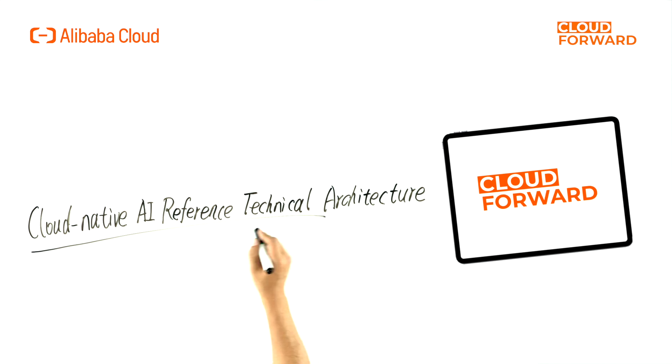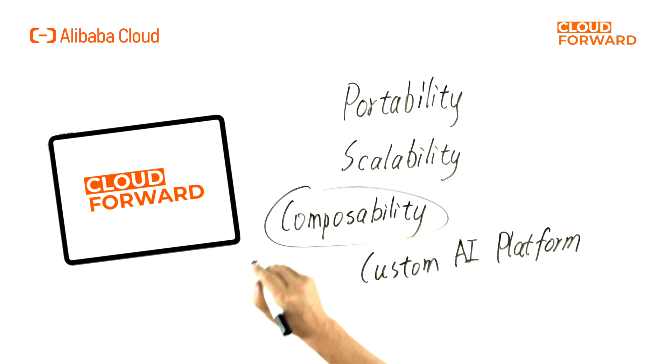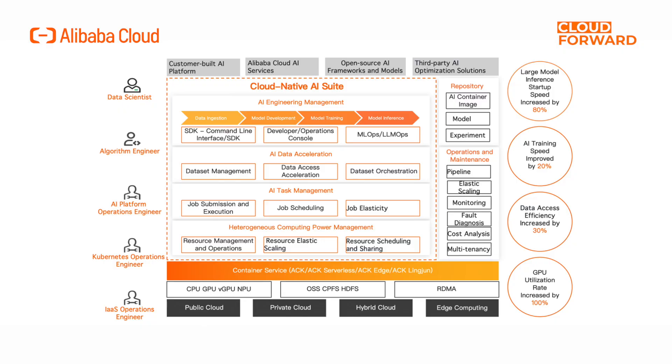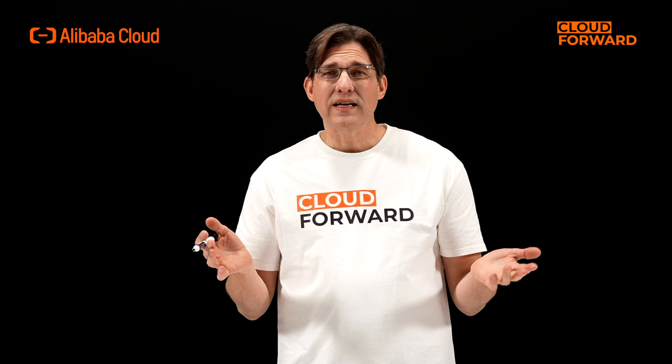To support these core scenarios, Alibaba Cloud has proposed the cloud-native AI reference technical architecture. This architecture, based on portability, scalability, and composability principles, exposes interfaces using Kubernetes standard objects and APIs, allowing developers and operation and maintenance teams to select any components as needed, assemble and develop them quickly, and build their custom AI platform. The reference architecture has Kubernetes container services as its foundation, encapsulating unified management of various heterogeneous resources downwards, and providing a standard Kubernetes cluster environment and API upward to run core components, achieving resource operations and maintenance management, AI task scheduling and elastic scaling, data access acceleration, workflow orchestration, and integration of big data services.